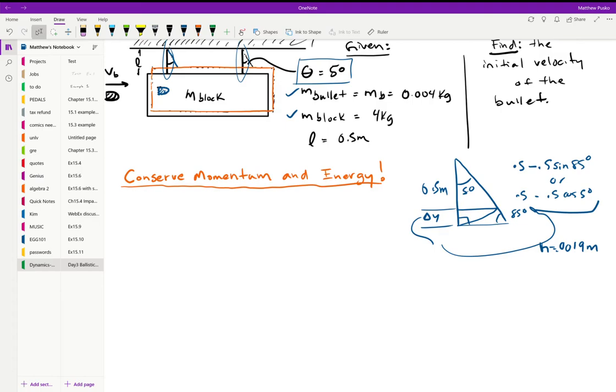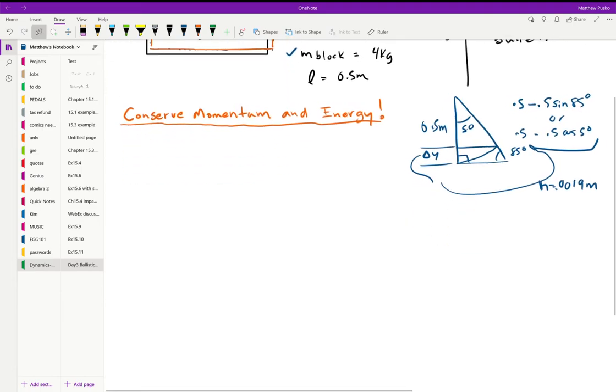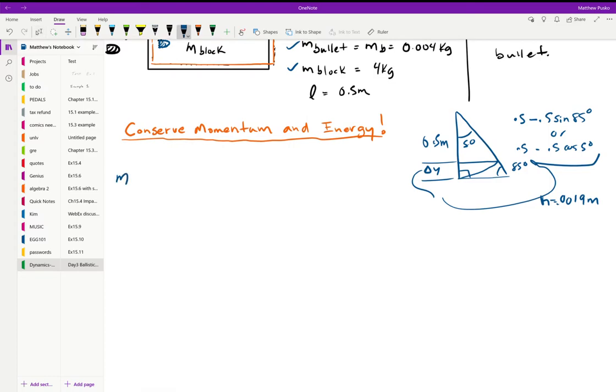What we need to do is look at the fact that we have an impact here and the two things are moving off together. That says to me that we should do the mass of the bullet times the velocity of the bullet, and this is all in the x direction, so we can leave off some vector signs for now. Mass of the bullet times velocity of the bullet plus the mass of the block times the velocity of the block, and they're going to move off together, so let's just call that some final velocity.